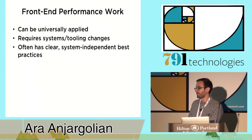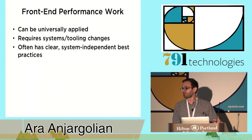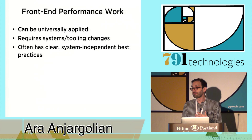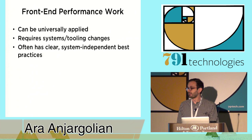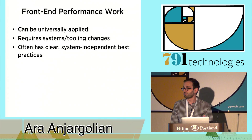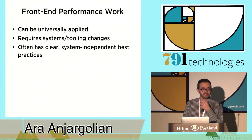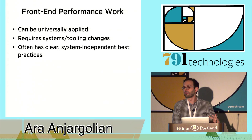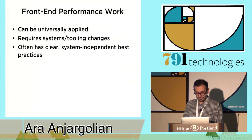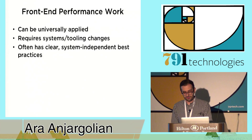The attributes of front-end performance work: they can be generally universally applied, meaning when you make a fix or improve something, it's going to affect almost every view or page of your site. They often require systems and tooling changes — things like overriding collect static or compiling something and putting it in a certain place. If you have ops teams at bigger companies, a lot of times your ops people have to get involved. Another attribute is there are often clear system-independent best practices, which is not often the case with back-end performance work.